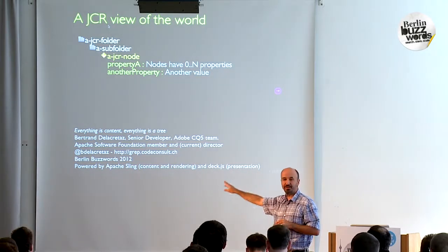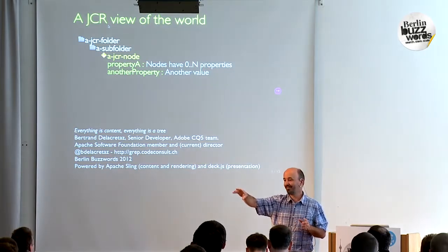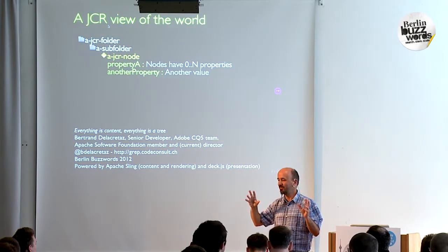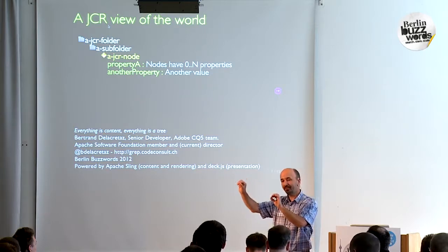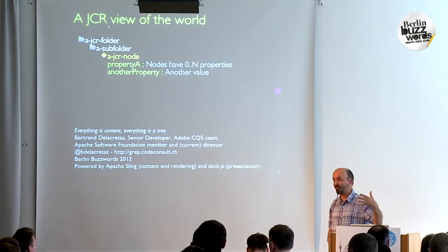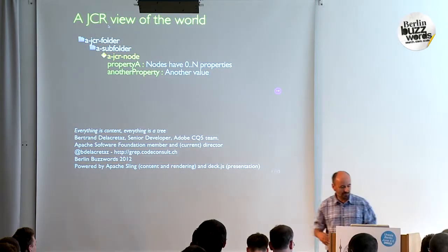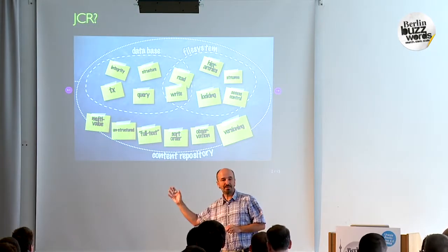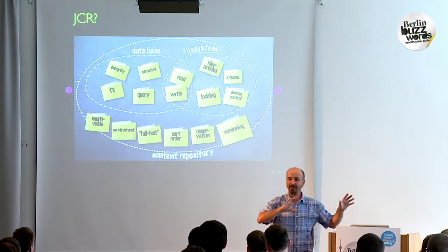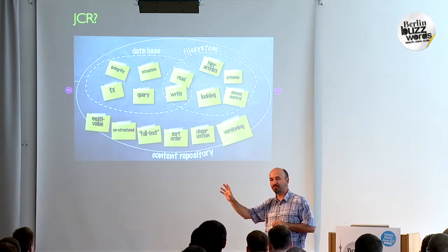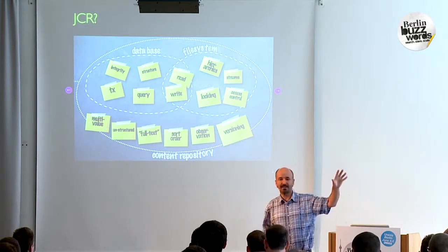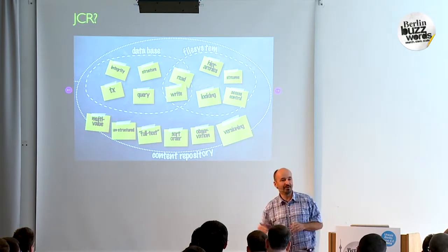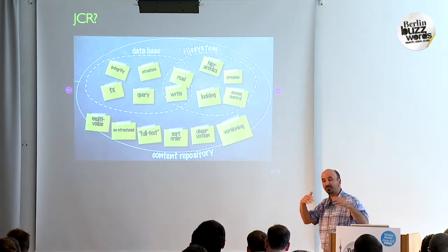The motto is everything is content, everything is a tree — which is actually wrong. If you said everything is a graph, that might be easier to accept. Everything is a tree doesn't really work for everything. We think that having a tree is good enough for the needs of content management, and I'm trying to demonstrate that by giving examples of tree structures. JCR is the best of both worlds between database and file system — you can do queries and have structured content, or have totally unstructured mess like a file system. You can have as much structure or as much freedom as you want.